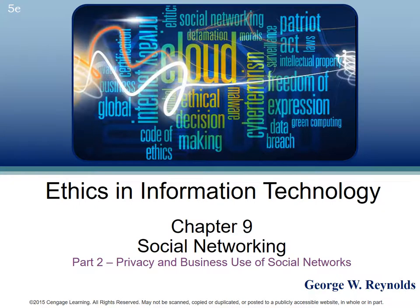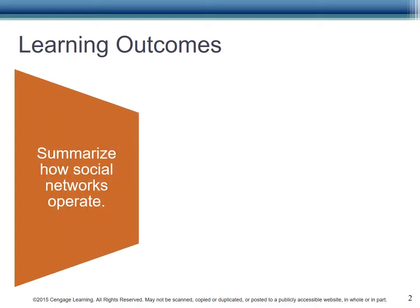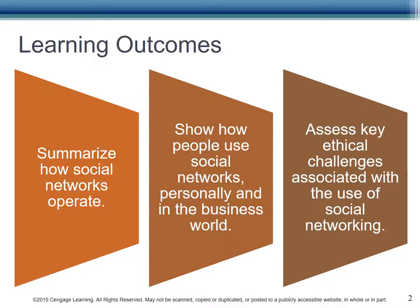Chapter 9, Social Networking, Part 2 of 3: Privacy and Business Use of Social Networks. The learning outcomes include: summarize how social networks operate, show how people use social networks personally and in the business world, and assess key ethical challenges associated with the use of social networking.